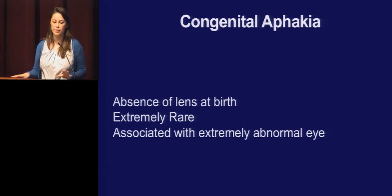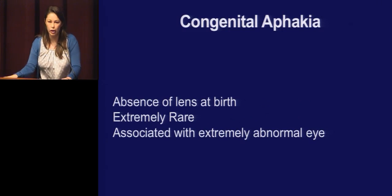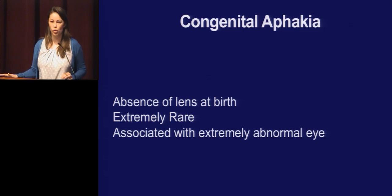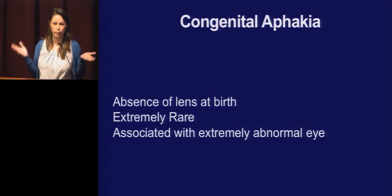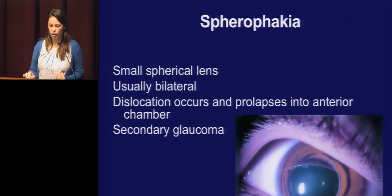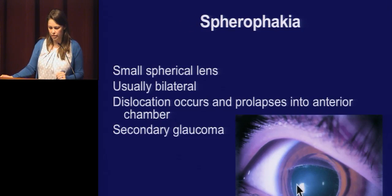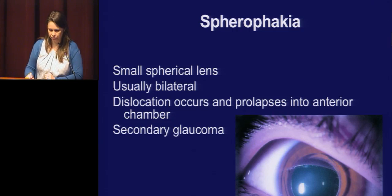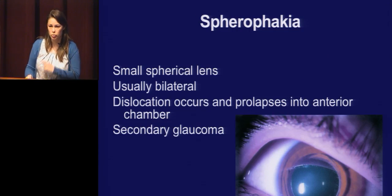Congenital aphakia is when you have an absence of the lens at birth. It's really rare, and these eyes are going to be abnormal — you're not going to see a normal eye just without a lens. Spherophakia is a small spherical lens, usually in both eyes. These lenses can dislocate — the lens can move totally into the anterior chamber — and these patients can get secondary glaucoma. It can also be associated with different genetic disorders.